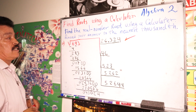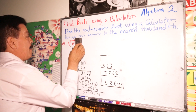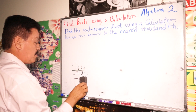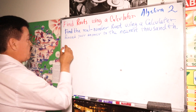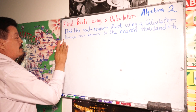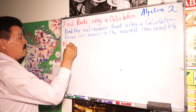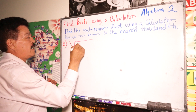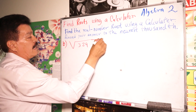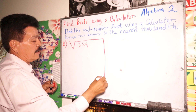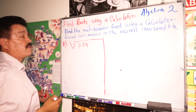So with decimals, this is the answer. Let's do another problem — a very simple problem. Problem B: square root of 329. You also find the answer to the nearest thousandth.